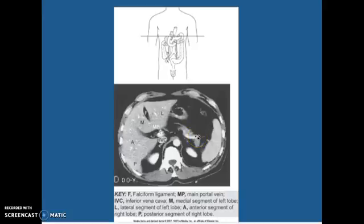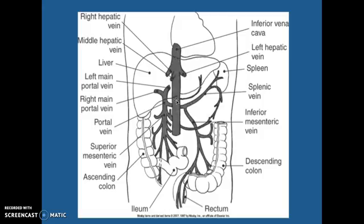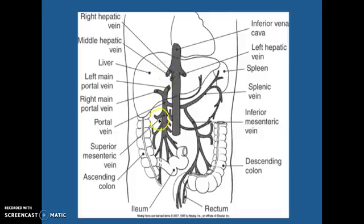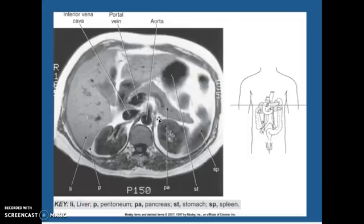This is a CT angio. Here's your left kidney, your right kidney, inferior vena cava, here's your aorta, and your main portal vein right by your IVC. Coming up — because it's the venous system — this is your inferior vena cava. We have your left hepatic vein, your middle hepatic vein, and your right hepatic vein.